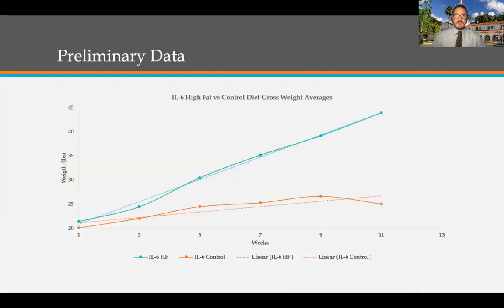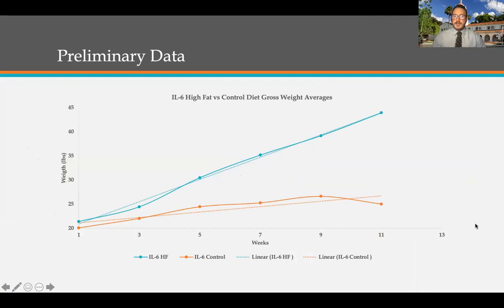Here's a look at some preliminary data on the weights of IL-6 knockouts on a high-fat diet versus IL-6 knockouts on a controlled diet. Over 11 weeks, these mice have gained quite a bit of weight — a very significant difference. By the trend lines, it looks like these patterns will not cross each other, and the mice are well on their way to obesity, if not already obese as young adults.